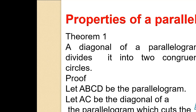Proof. Let ABCD be the parallelogram. Let AC be the diagonal, which divides the parallelogram into two triangles, namely Triangle ABC and Triangle CDA. In a parallelogram, AB is parallel to CD and BC is parallel to AD. AC is a transversal.